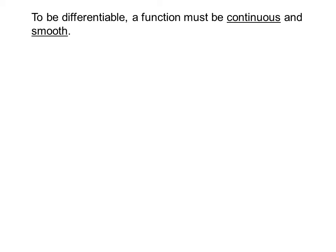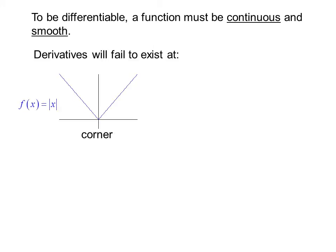To be differentiable, a function must be continuous and smooth. Derivatives will fail to exist at a corner, such as this graph of f(x) = |x|.